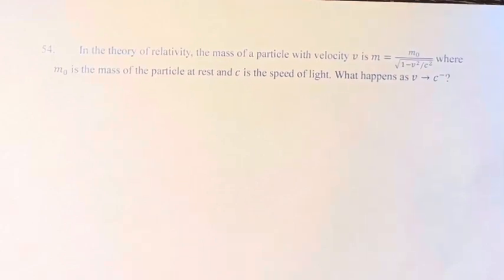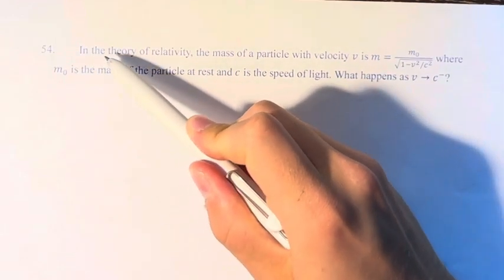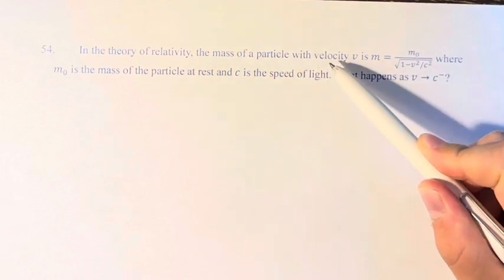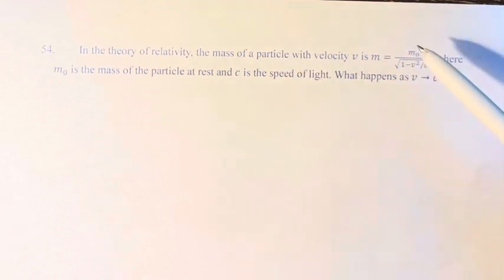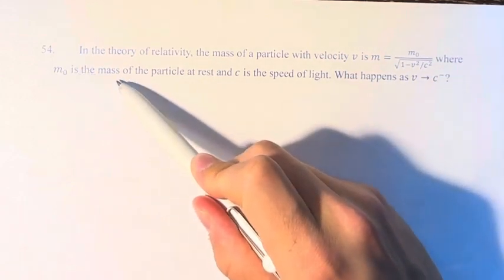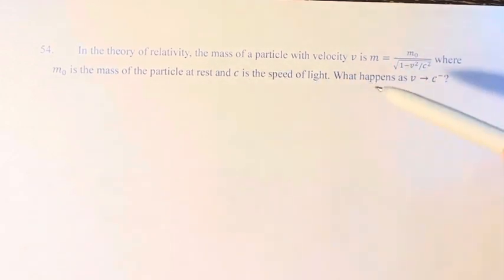Hello and welcome back to another video. In this problem we're told that in the theory of relativity, the mass of a particle with velocity v is m = m₀/√(1 - v²/c²), where m₀ is the mass of the particle at rest and c is the speed of light.